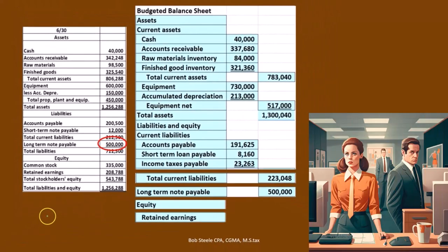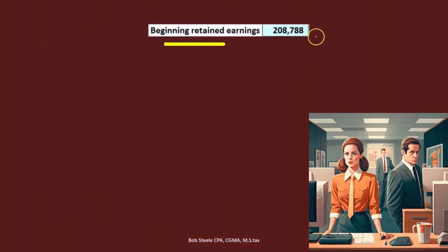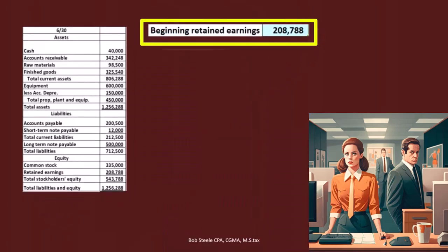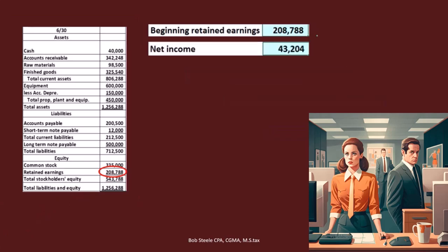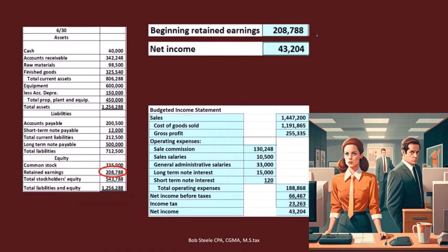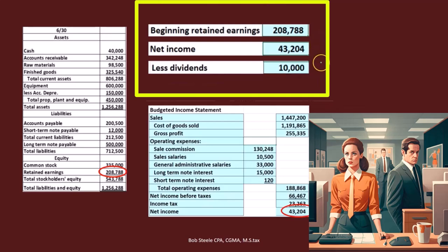Now we're going to move to the equity section where we're going to have the retained earnings. We'll do the calculation for retained earnings, which will be the beginning retained earnings — which we get from the last period's balance sheet — plus the net income from the income statement, then subtract the dividends that we paid out.